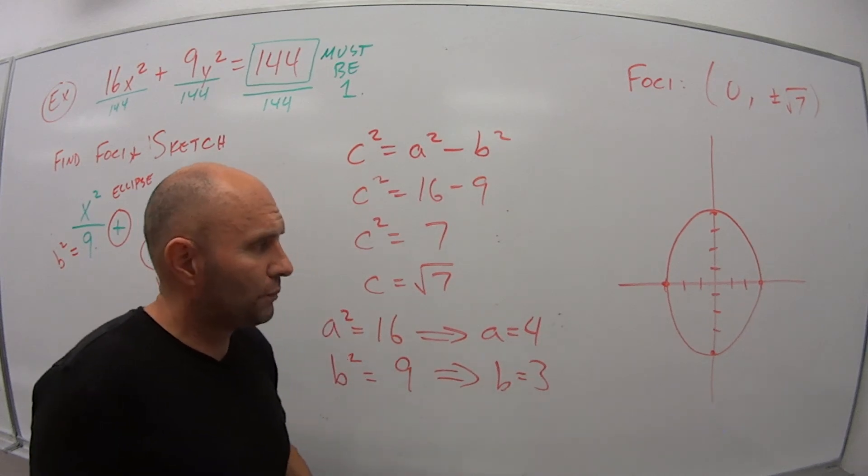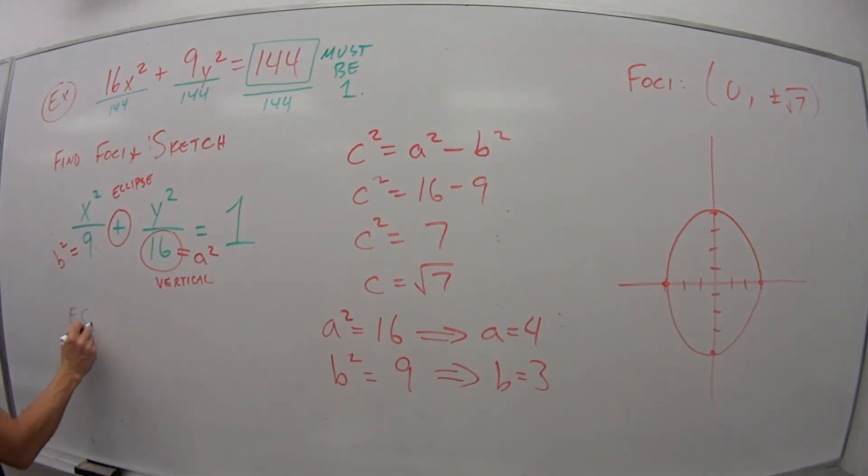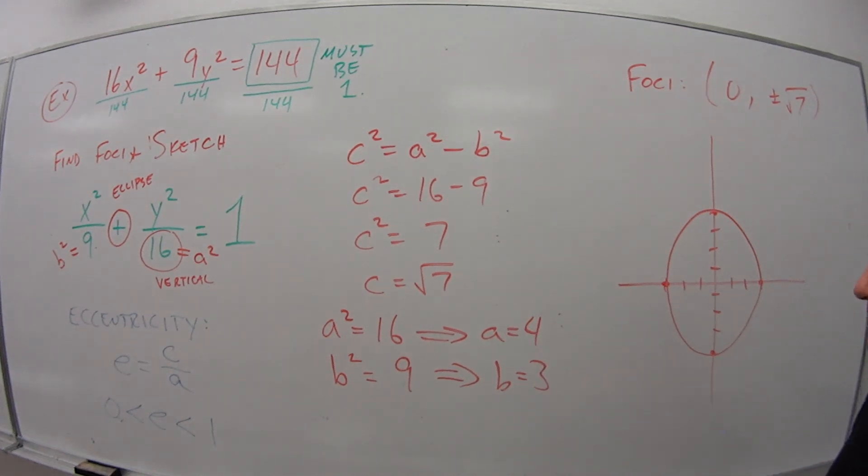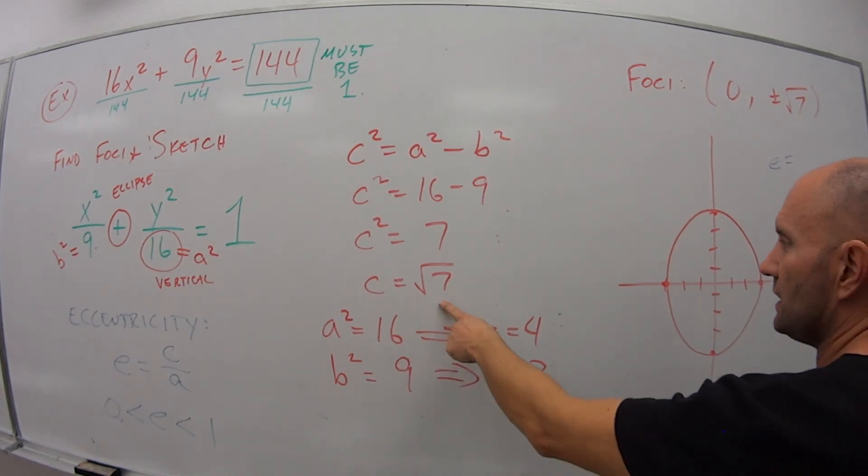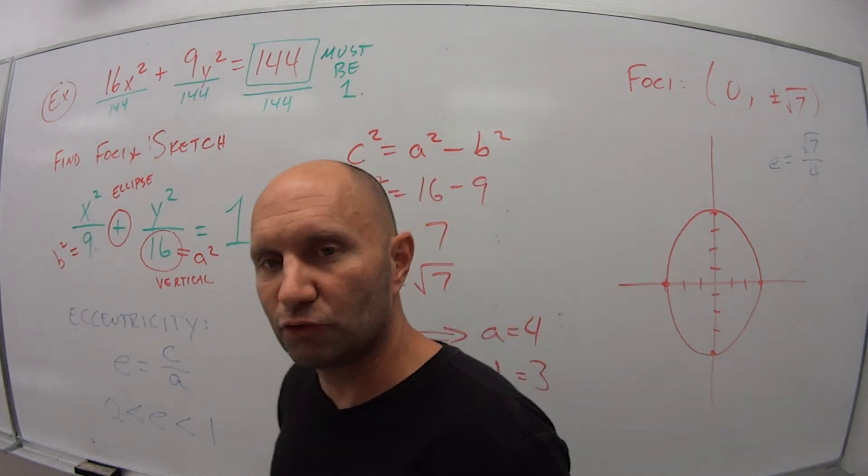One last topic for 11.2, the idea of eccentricity. Eccentricity has the following formula: e is equal to c over a. And for an ellipse, our value of e is always going to be between 0 and 1. So if you're asked what is the eccentricity of this ellipse, if we use this example here, our eccentricity, our value of e is c, which is square root of 7, over a, which is 4. So this would be the value for our eccentricity.